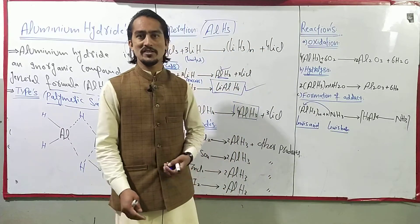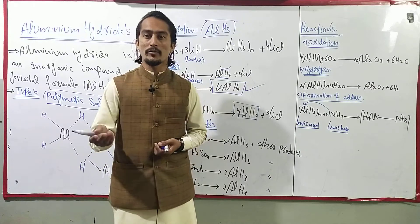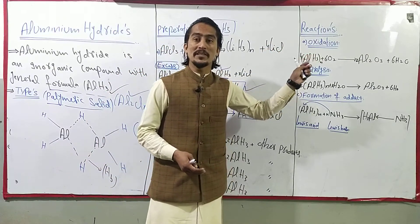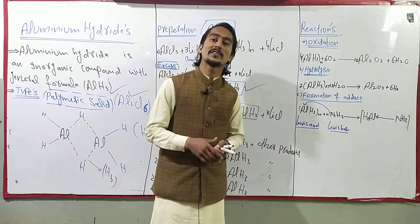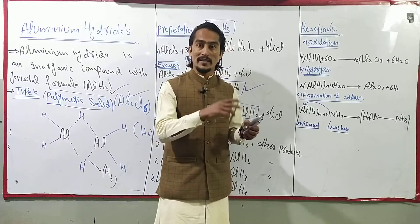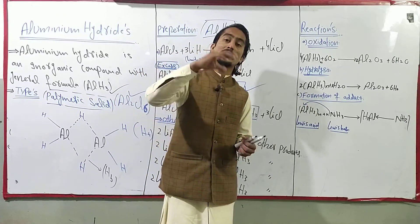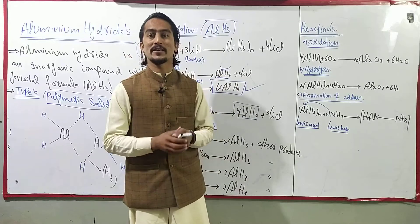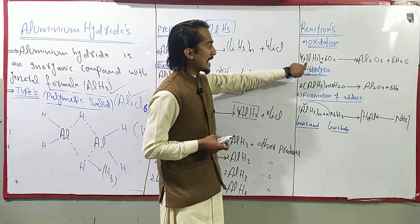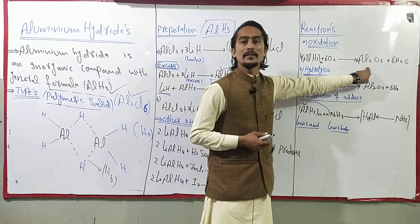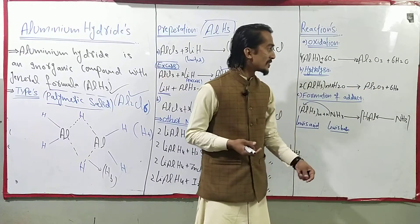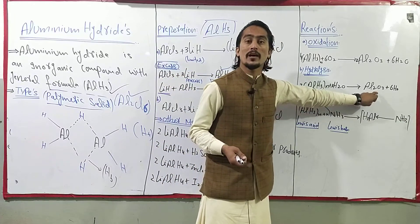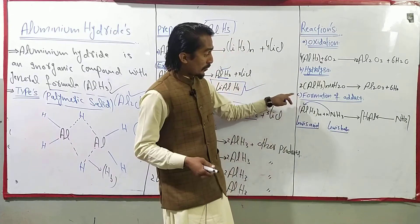The first important reaction of aluminium hydride is oxidation. A layer of Al2O3 forms on the surface of aluminium. When aluminium hydride undergoes oxidation with oxygen, it gives aluminium oxide (Al2O3). This oxidation reaction produces aluminium oxide as the product.